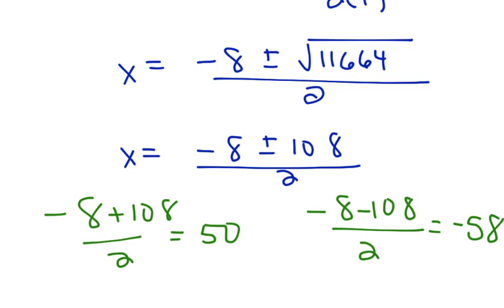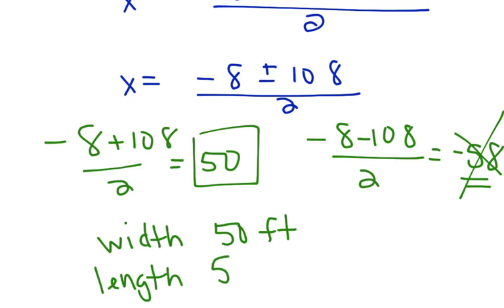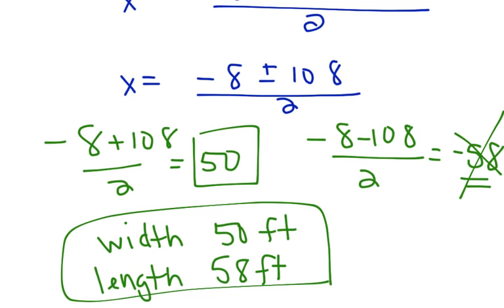We're talking about width. Can the width be negative 58? No, length can never be negative. So, even though I got two answers, this is the only acceptable answer. So, the width must be 50 feet, and the length must be 50 plus 8 feet. And those are the dimensions of my rectangular lot.